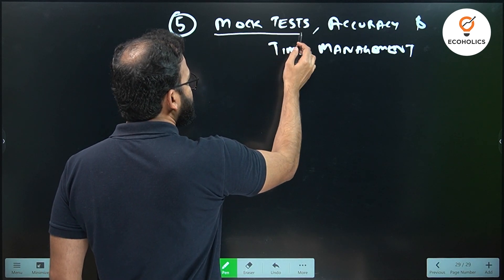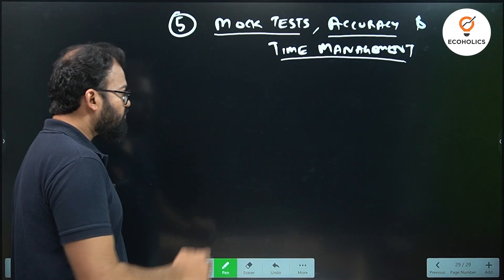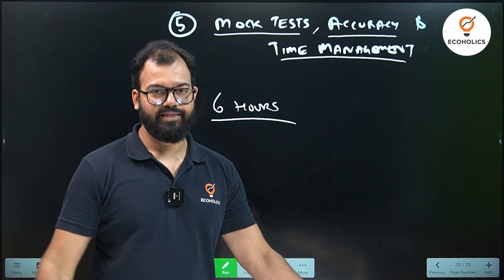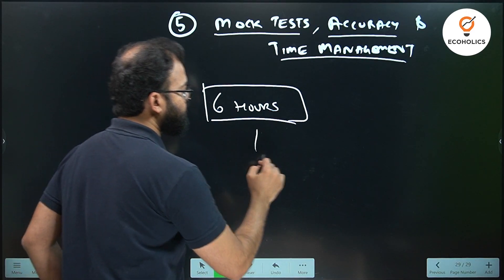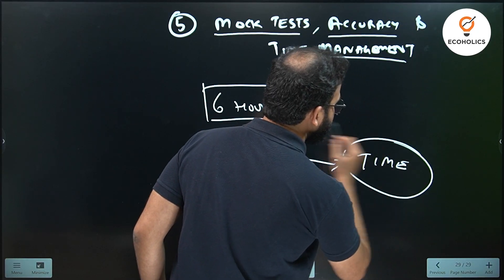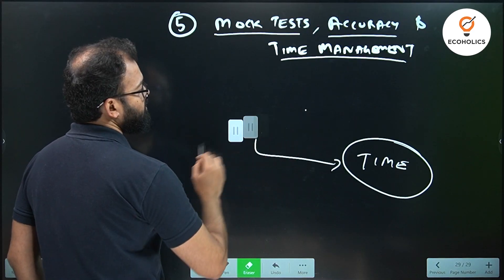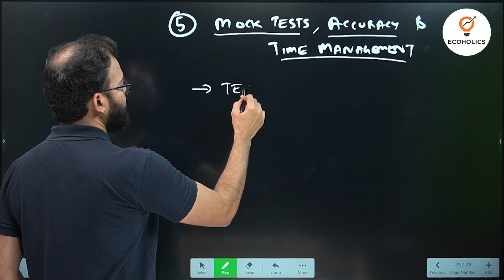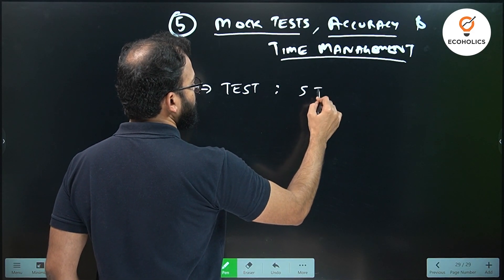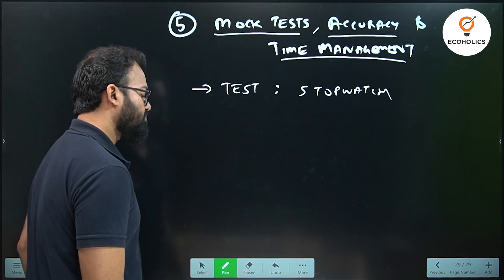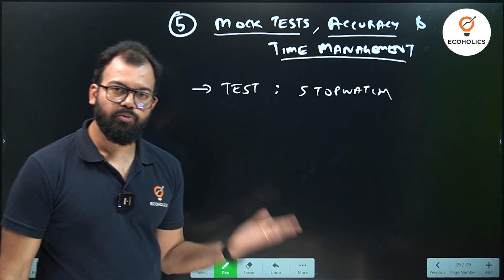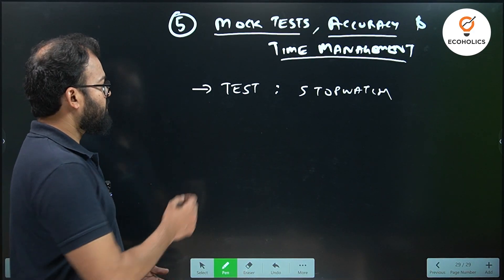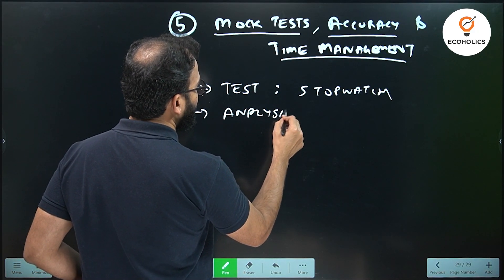Fifth one is three important things: mock test, accuracy, and time management. If I give you six hours to solve UGC NET Economics paper, you will be able to do it easily in these six hours. It's easy. But the problem is that the time given in the examination is not six hours. So you have to do this in a particular stipulated time period with a clock on. So whenever you give any test, always remember to put a stopwatch. Always remember, even if it is taking too much time, still you put a stopwatch, because if you don't put a stopwatch, you will not understand how much extra you are taking. Right now you have to reduce it.